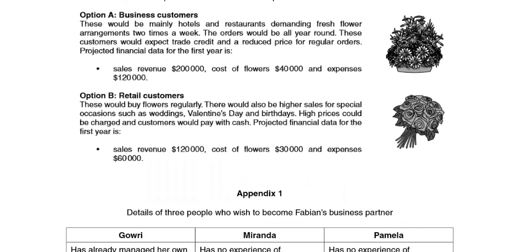Option A is business customers — mainly hotels and restaurants, demanding fresh flower arrangements two times a week. The orders would be all year round. These customers would expect trade credit — a reminder that trade credit is that extra time to make the payment — and also a reduced price for regular orders. The projected financial data for the first year is sales revenue of $200,000, cost of producing the flowers of $40,000, and expenses of $120,000.